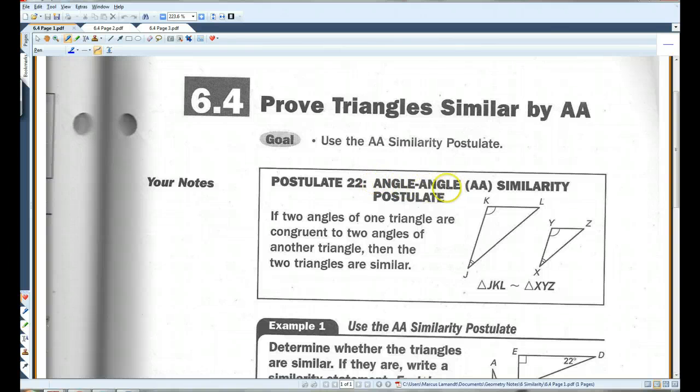AA stands for angle-angle. Basically, if two angles in one triangle are congruent to two angles in another triangle, then the two triangles are similar.